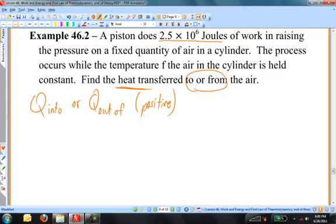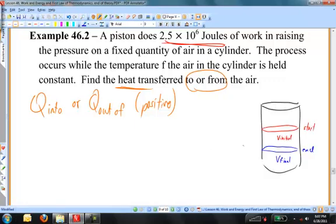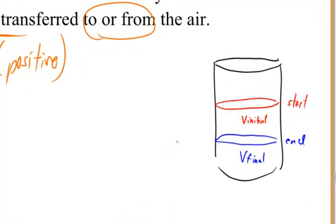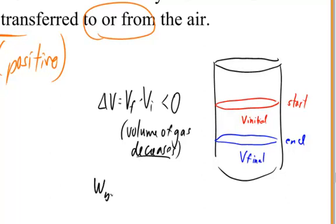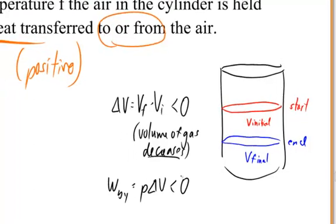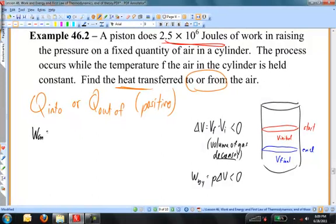We're told that a piston does 2.5 times 10 to the 6 joules of work, meaning the piston is moving downward in the cylinder. The final volume is smaller than the initial volume, so the change in volume is negative. The work done by the gas — pressure times delta V — is therefore a negative number. Since the piston does work on the gas, the work done on the gas is positive 2.5 times 10 to the 6 joules.